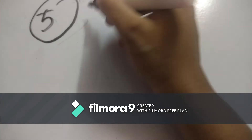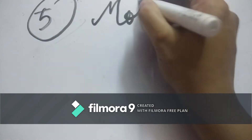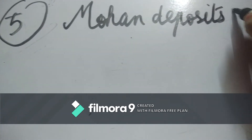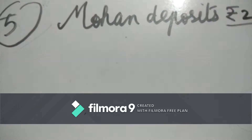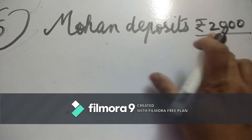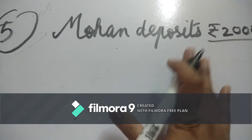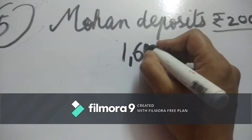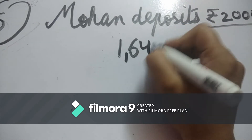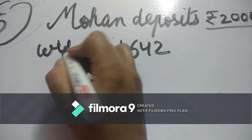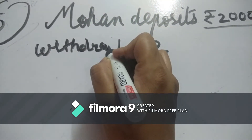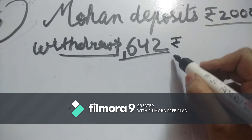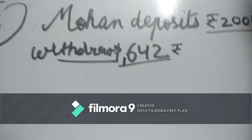Question 5: Mohan deposits 2,000 rupees in his bank account. Then he withdraws 1,642 rupees. The next day he withdraws some more rupees.